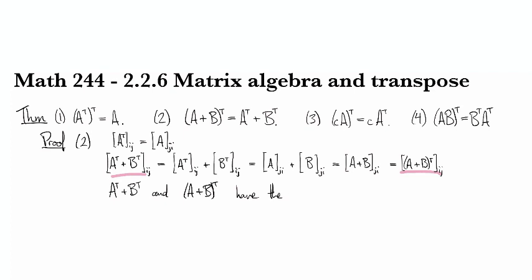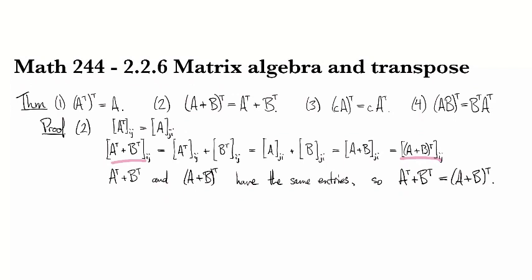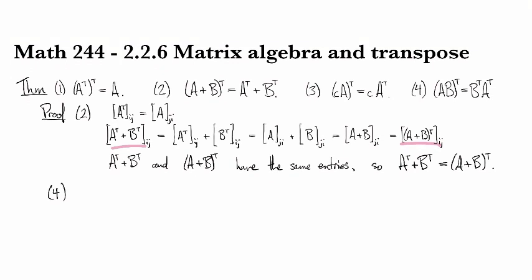Okay what about part four? So for part four of the theorem let's take a look at the transpose of the product and we'll take a look at its ijth entry. So the ijth entry of this is going to be, well let's see, that's going to be the jith entry of A times B.